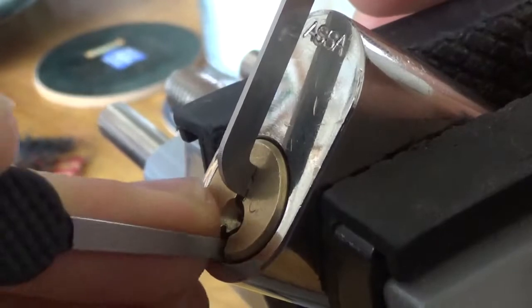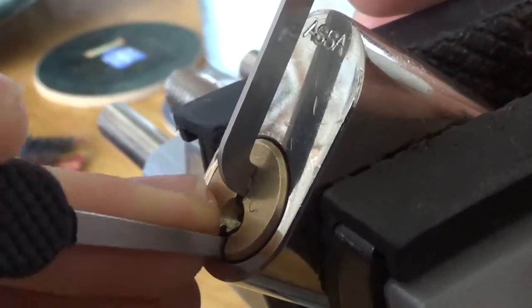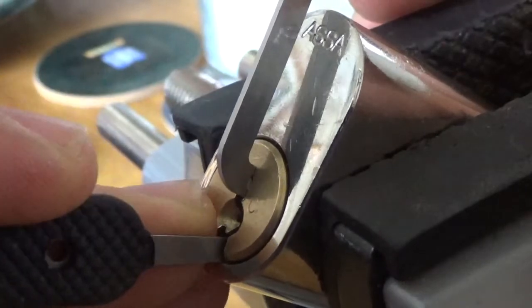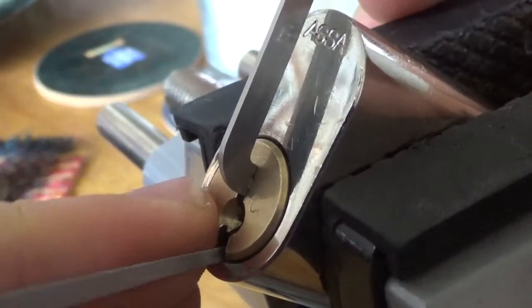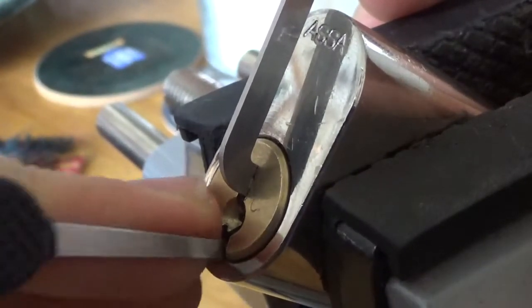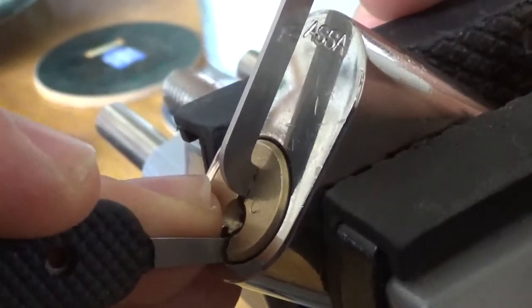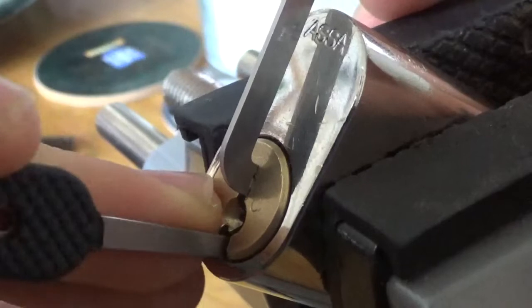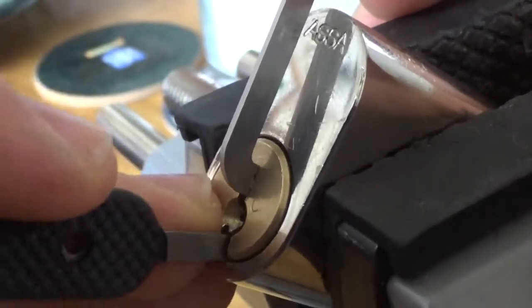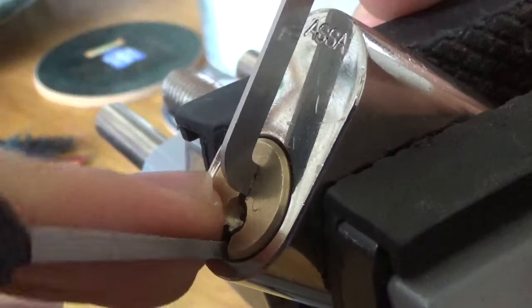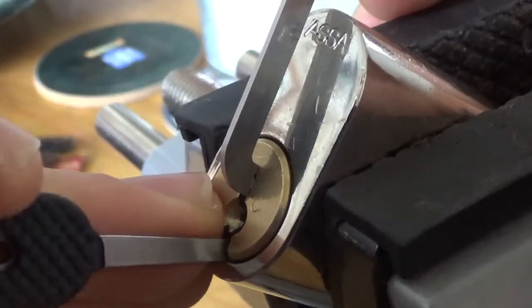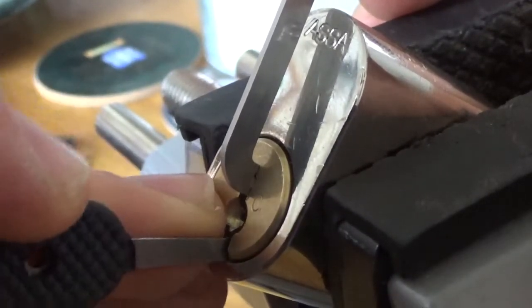And because there's a tubular lock in there, I'll send a set of tubular impressioning tools. Because I have three sets and I don't need three sets, I really only need one. So you could have the choice between the GOSO set or the three-piece HUK set.